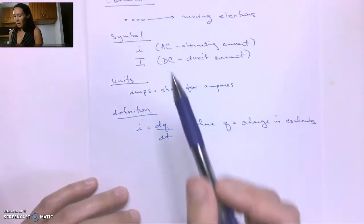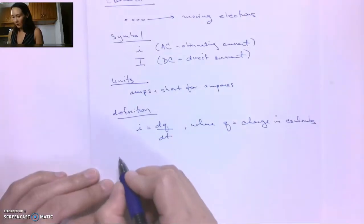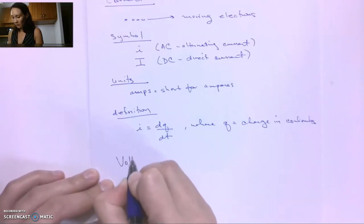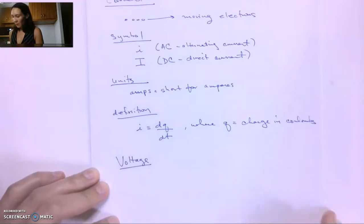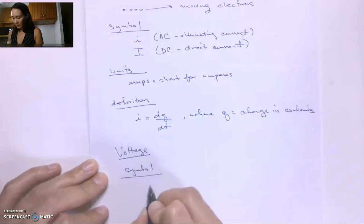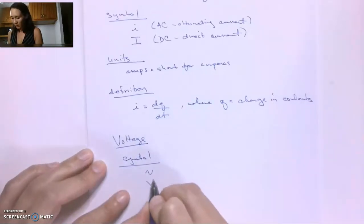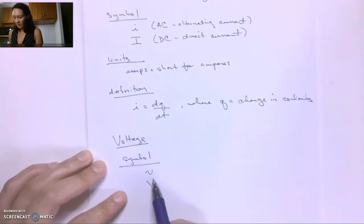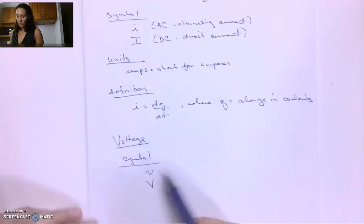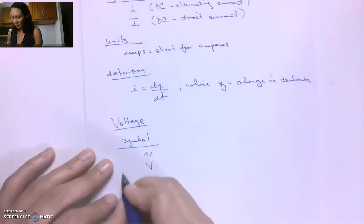Now in addition to current, a big concept that we need to understand at first is voltage. Now voltage, the symbol variable is you'll see a lowercase v like this or an uppercase v. And same thing, this is usually used for direct current calculations, and this one is used for AC, but this is the more generic variable, so that's one we'll probably use.